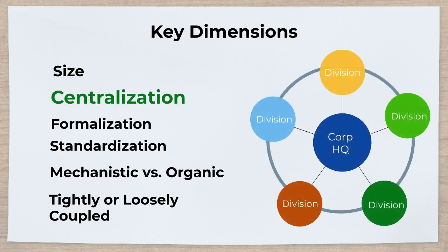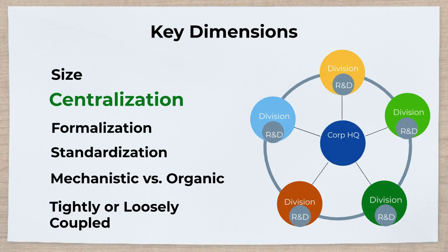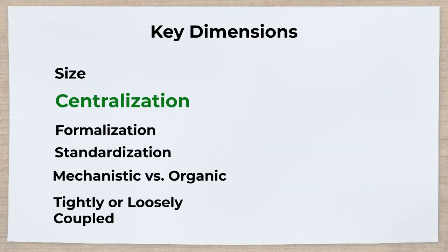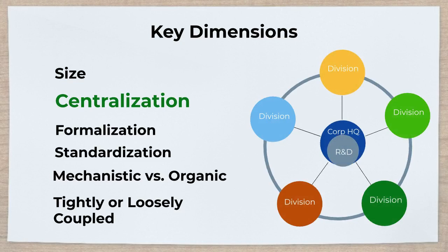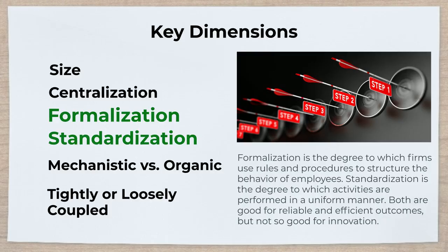Centralization refers to the degree to which power and control are kept at the top levels of the corporation. Centralization can also refer to where R&D takes place — for example, R&D could be decentralized out into all the divisions of the firm, or R&D could be centralized at corporate headquarters. Decentralized R&D takes advantage of local knowledge of a product or geographic market; centralized R&D better enables company-wide initiatives and economies of scale. Some firms do both.